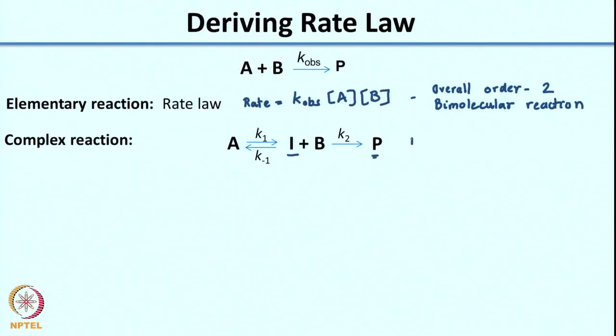When writing the rate law for a reaction like this, you always start with the product. The rate of formation of P would be dependent on rate constant K2, concentration of I, and concentration of B. However, this is not the complete rate law because it does not take into account K1, K-1, and the concentration of A. So this is not your complete rate law — we need another approach for complex situations.